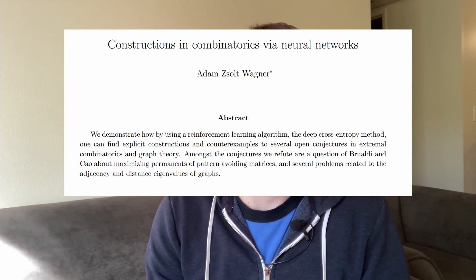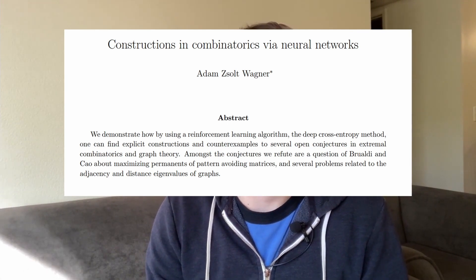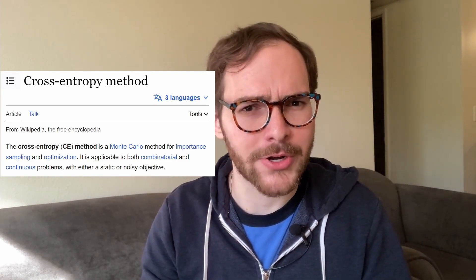A really cool paper by Adam Wagner did just this, when he used neural networks to find counterexamples to several problems in combinatorics. He generated counterexamples to conjectures using a technique called the cross-entropy method. Here's how it works.